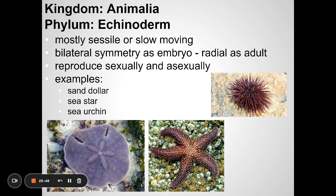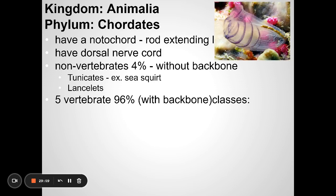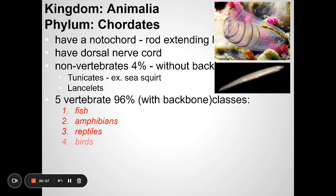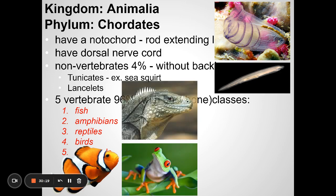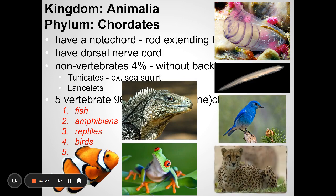Finally, our group: we are in phylum Chordata — organisms that have a spinal cord. Most of these have a backbone: fish, amphibians, reptiles, birds, and mammals. These are the different classes within Chordata. This is just giving you a general overview — don't worry about memorizing the characteristics of each group; just get a sense of where familiar living things fit in this classification system.